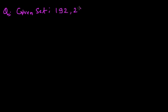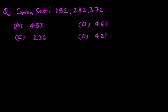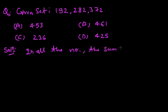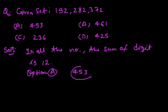Next type of question. Given set: 192, 282, 372. Options: A) 453, B) 461, C) 236, D) 425. Choose the number which is similar to the numbers in the given set. In the given set, the sum of digits of all numbers is 12. According to this, option A: 453 — digit sum is 4 + 5 + 3 = 12. Answer is option A.